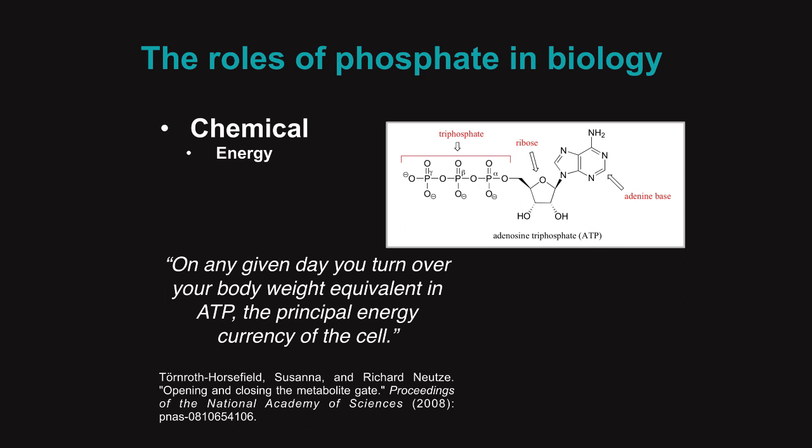Moving on to chemical roles of phosphate, the most important is energy. ATP — adenosine triphosphate — has this triphosphate polyphosphate tail attached to it, and it is a high-energy chemical. It's probably the most important energetic carrier in all of biology. As an example of that, on any given day you'll turn over your body weight equivalent in ATP, showing just how much of it you use.